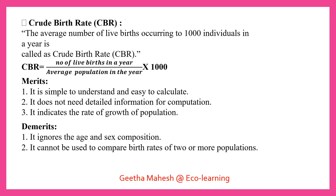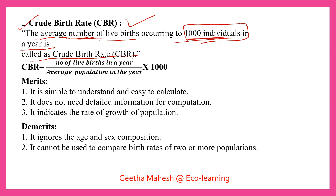Dear students, in this video we will talk about crude birth rate. Crude birth rate is the average number of births occurring per thousand individuals in a year. To repeat: the average number of births occurring per thousand individuals, measured per year.